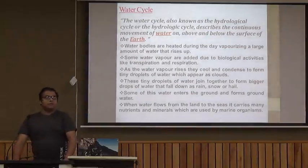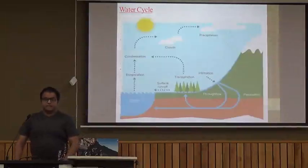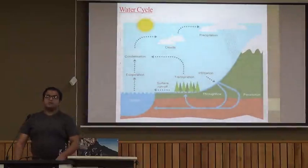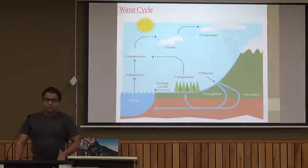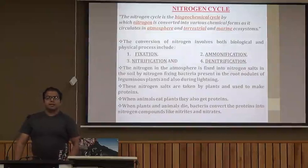Some of this water enters the ground and forms groundwater, whereas some stays at the surface in rivers, lakes, and ponds, forming surface water. This is a typical water cycle in which you can see various processes involved, like condensation, evaporation, transpiration, infiltration of water through soil layers to reach groundwater, and precipitation.